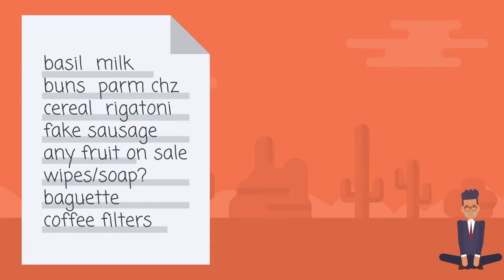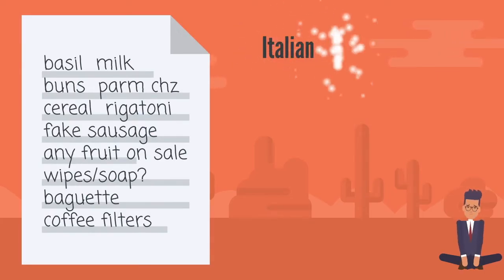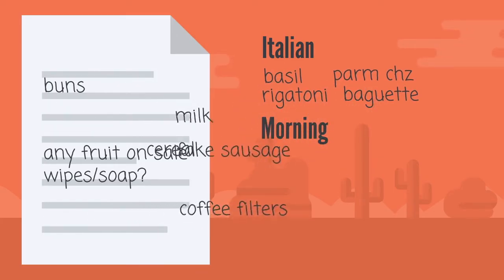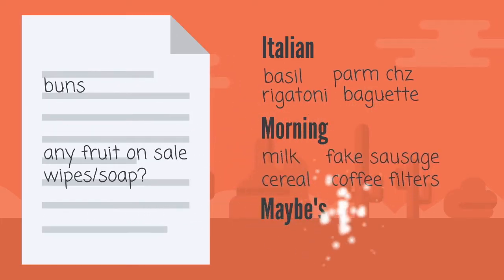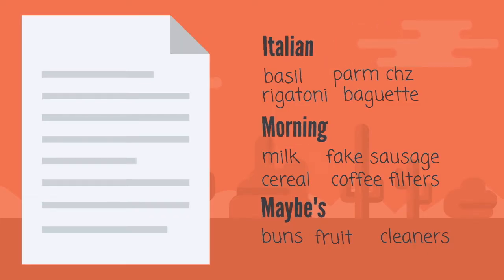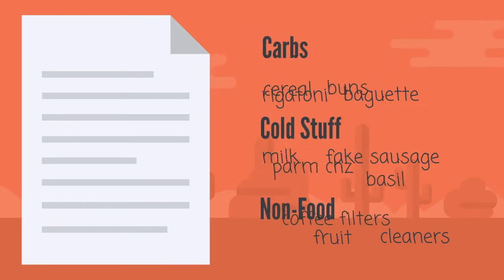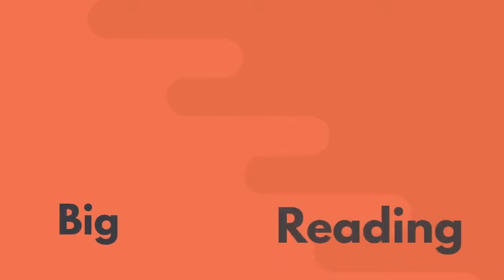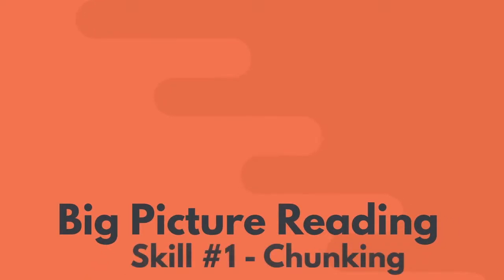How could we organize these 15 things into three or four categories? Some of this is basically an Italian meal. Some of these are sort of like breakfast or morning items, and then we've got the leftovers. We can even re-chunk wipes and soap — just call them the cleaners. Or we can chunk it a different way: some of these items are carbs, a bunch are cold or frozen, and then some of them you can't eat. Chunking is kind of like running a compression algorithm on your thoughts — like making a zip file of the paragraph you just read.